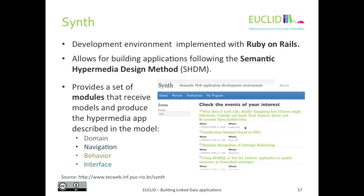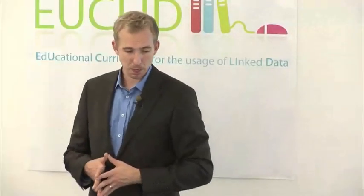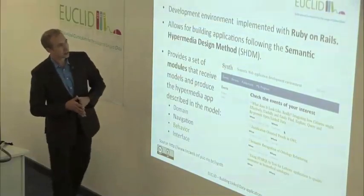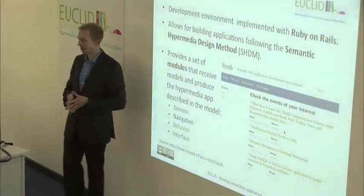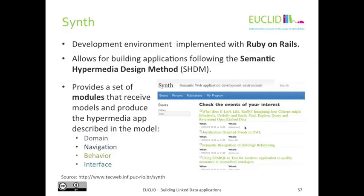Another very intriguing and unusual approach to linked data application development is SIREN. SIREN is special on a technical level, from top to bottom — for one, it's built on Ruby on Rails. But the big thing is that SIREN uses a principle called semantic hypermedia design method, in which a semantic meta-model describes how the application should be built. You hand that model to SIREN, and it runs the application based on that model.